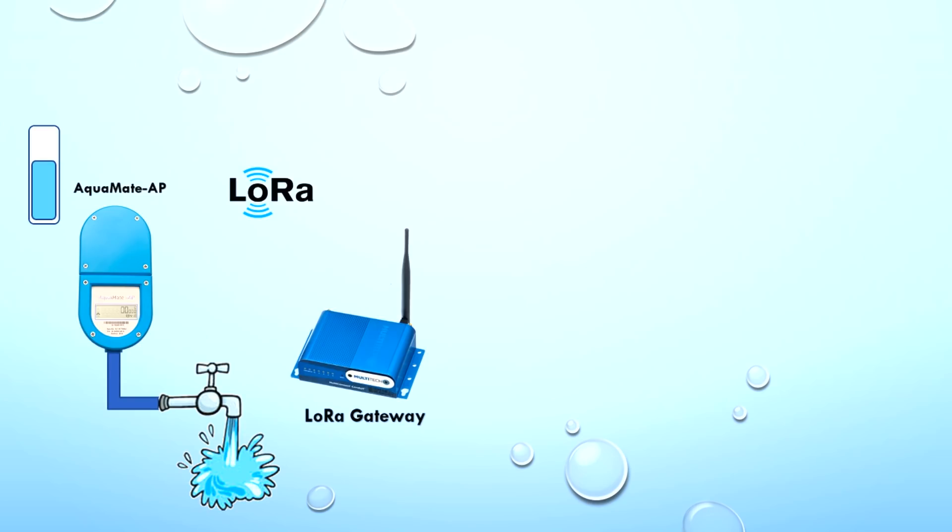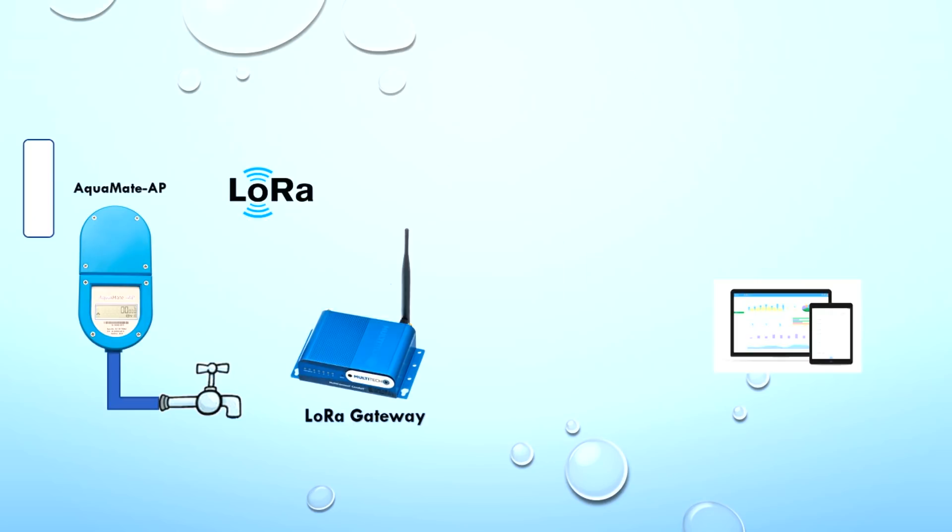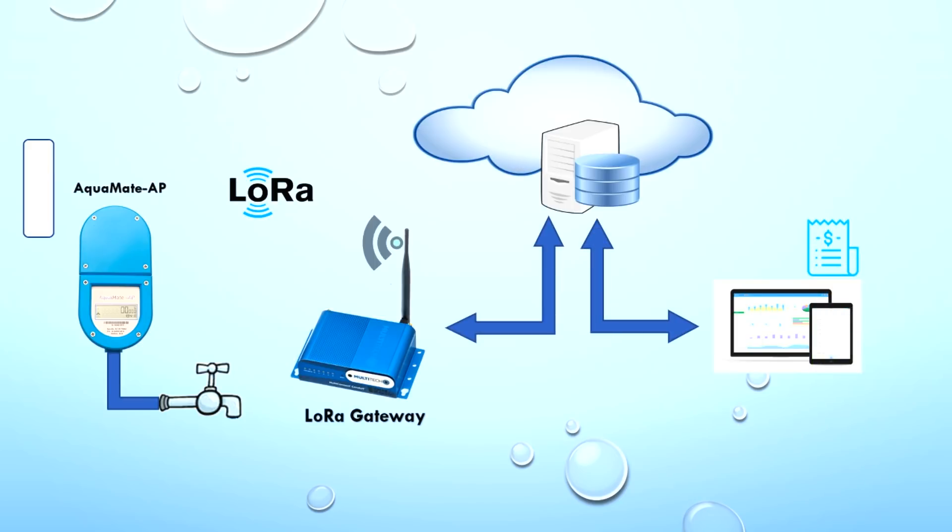When the water balance expires after the water being used up over the time, shutoff valve is activated and automatically turns the water off. And when the customer purchases another volume of water, the balance is updated and when the Aquamate has non-zero balance available, the valve opens automatically and water supply is restored.